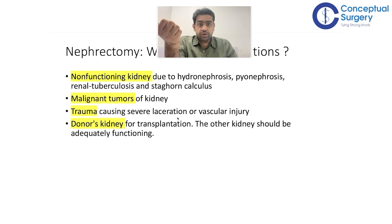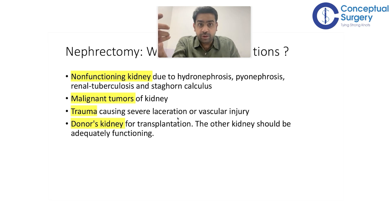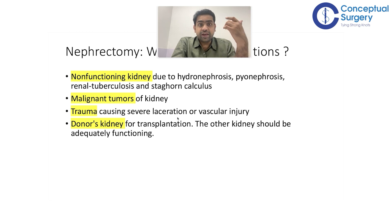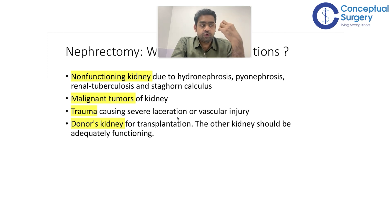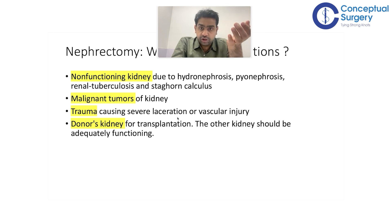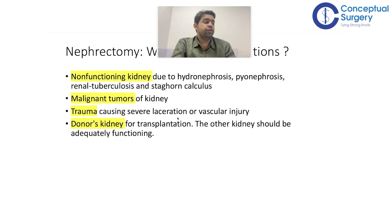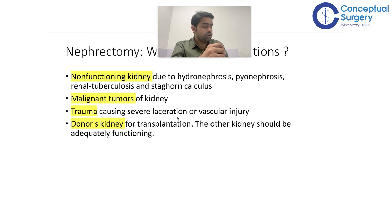The indications are: a non-functioning kidney — if somebody's kidney has not been functioning at all; if there is a malignant tumour in one particular kidney, you obviously have to remove that kidney; if there is a trauma which has led to a grade 4 or grade 5 injury and the patient is hemodynamically unstable, you definitely have to remove that kidney; and if there is a donor kidney — if somebody wants to donate their kidney to a relative or friend — you can perform what is called a donor nephrectomy. These are the broad indications for performing a nephrectomy.